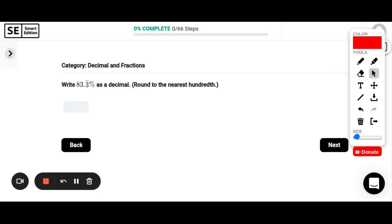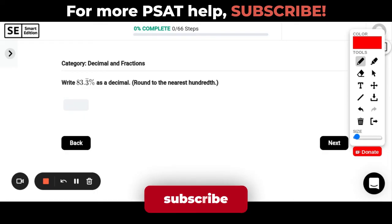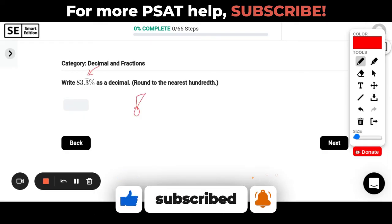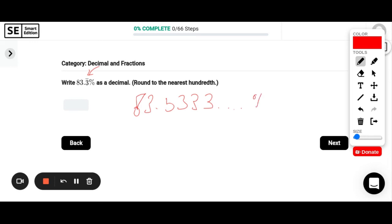Write 83.3 repeating percent as a decimal. So this line up here above that three means repeating. It goes on and on and on. So this is really 83.333 on and on forever percent. We need to write this as a decimal and then round to the nearest hundredth. So to write this as a decimal, we swoop our decimal to the left twice. To the left twice. So this would be 0.83 and that three would just repeat forever and ever. So if I want to know what it is to the nearest hundredth, this is my hundredth place. So I look at the number after it to tell me, do I stay or do I have to round up? And because it's a three, that tells me to stay. So to the nearest hundredth, this would be 0.83 as a decimal.